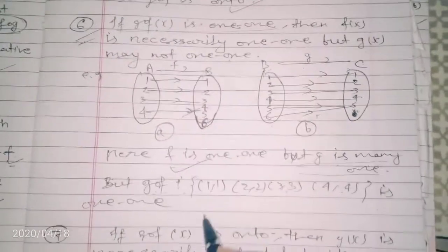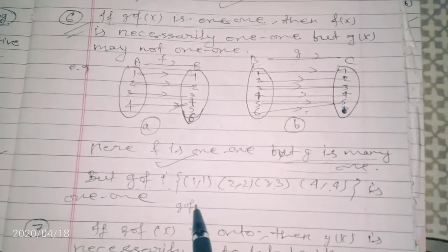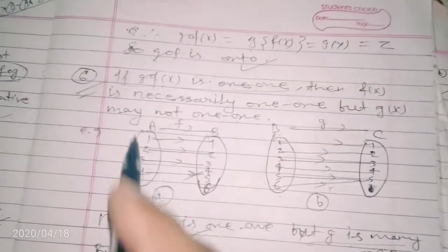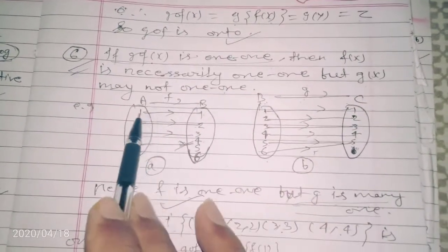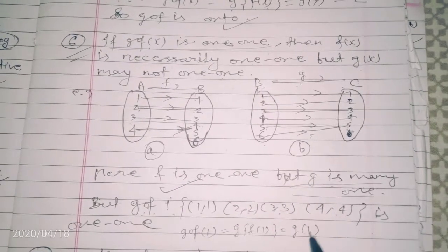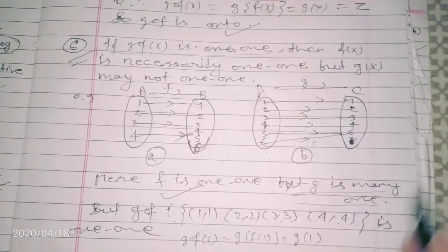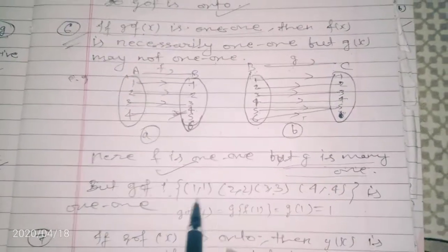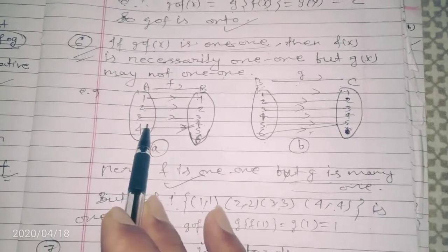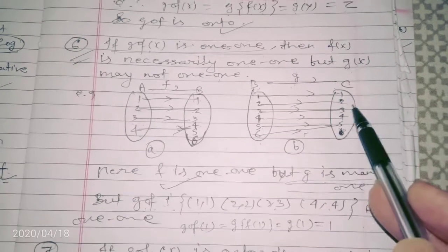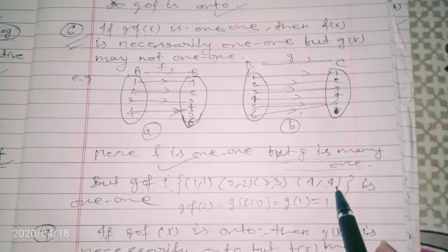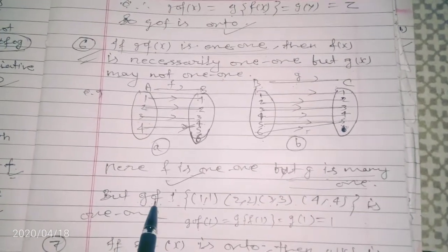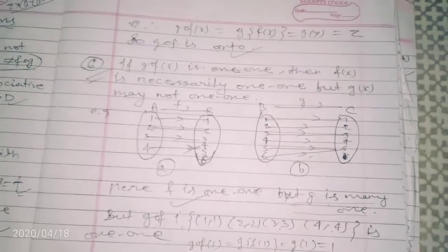To find gof, the domain of f is {1,2,3,4}. gof(1) = g(f(1)) = g(1) = 1, and similarly gof gives {1→1, 2→2, 3→3, 4→4}. So gof is one-one because every element in A maps to a different element in C. Therefore: if gof is one-one, f is always one-one, even though g here is many-one.